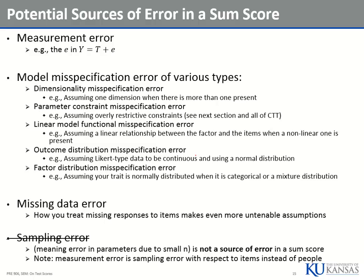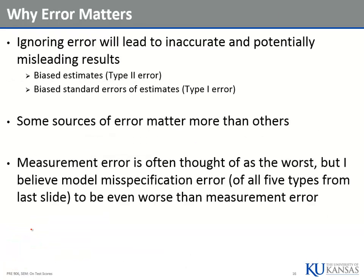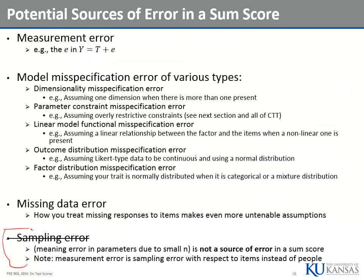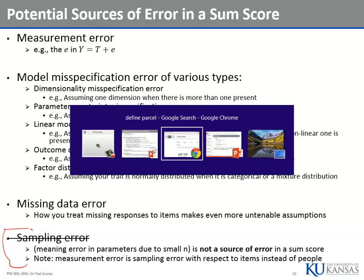One thing you don't have under the classical test theory approach — which is nice — is sampling error. When you get into models, you have to estimate model parameters, each depending on sample size. The smaller your sample, the more variability there is around each parameter — those factor loadings, those unique variances, or in IRT the a and b parameters. If you have sampling error, it will show up later. So that covers why it matters. Let's take a ten-minute break.